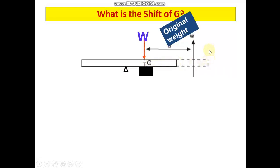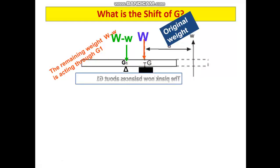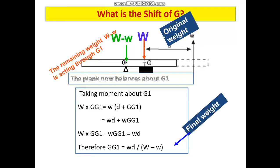Initially our system had a weight W. That was the original weight of the object and the centre of gravity was at G. Later we removed a small mass w. The new weight of this plank is W minus w and the centre of gravity has shifted to a new point G1 which is away from the removed portion. The plank will now balance only at this point G1 because G1 is the new centre of gravity of the plank after removal of the mass. To calculate this distance GG1, the shift of centre of gravity, we need to take moment about G1.